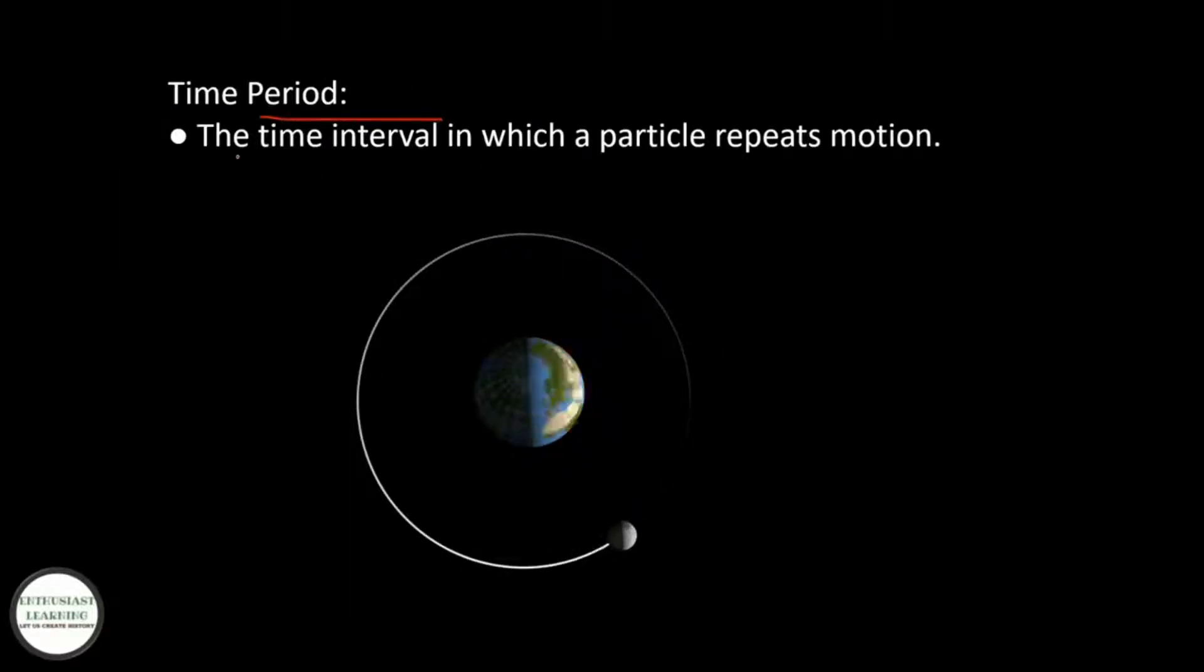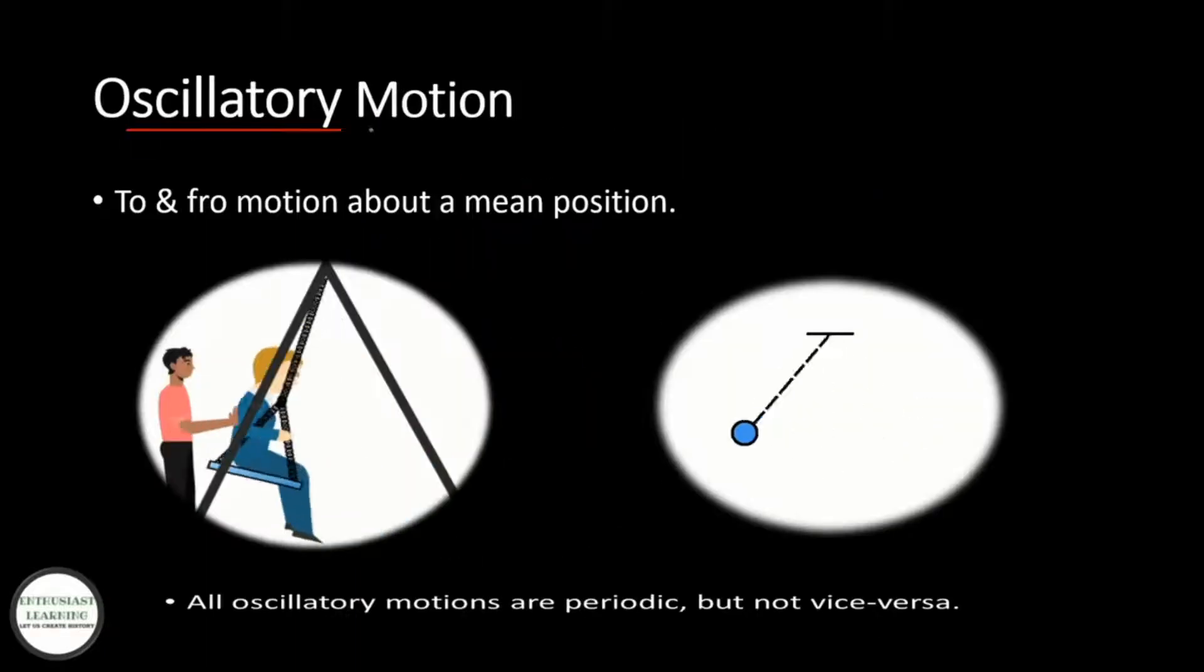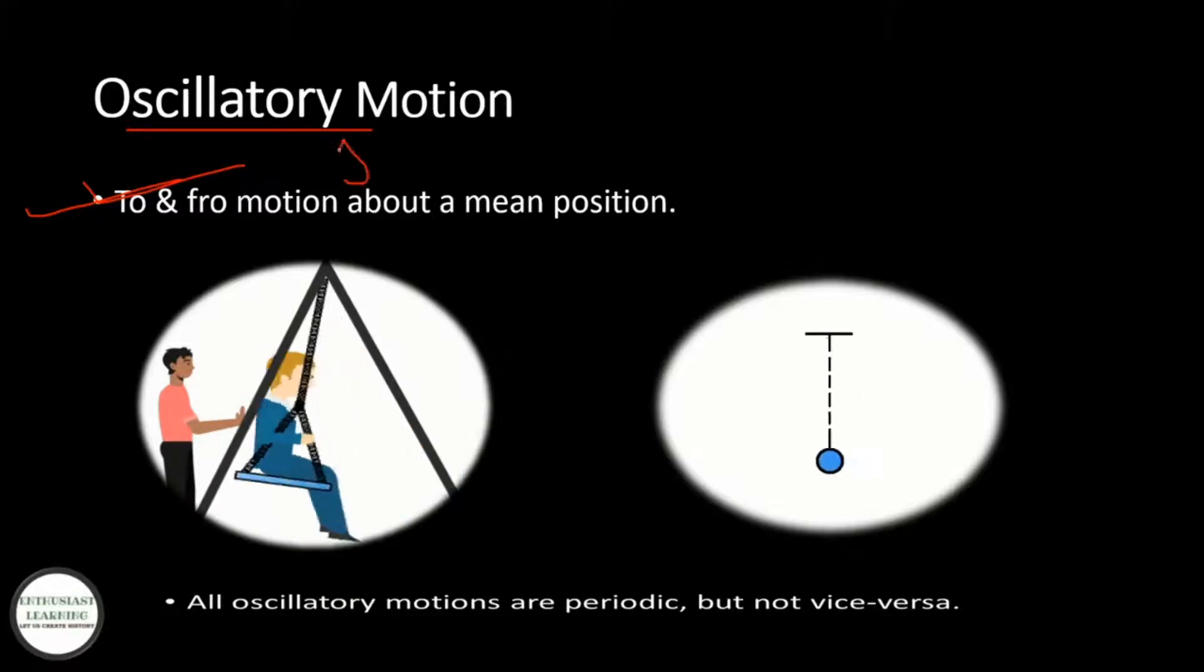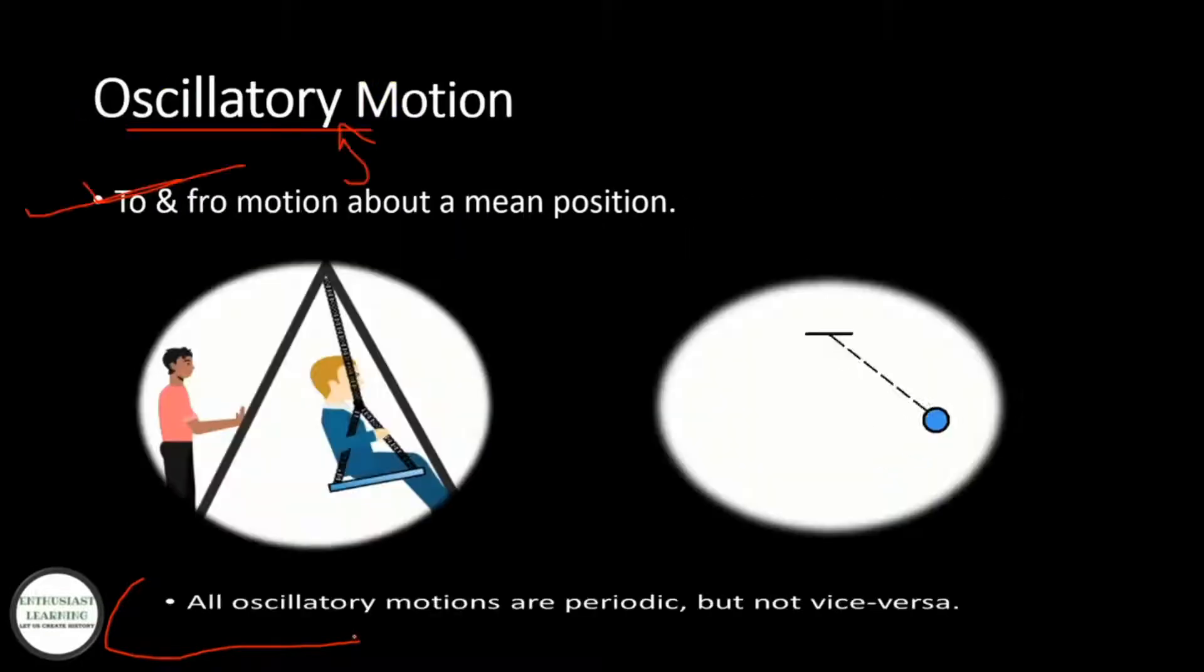Time period: the time interval in which a particle repeats motion. Oscillatory motion: to and fro motion about a mean position is called oscillatory motion. Note: all oscillatory motions are periodic, but not vice versa.